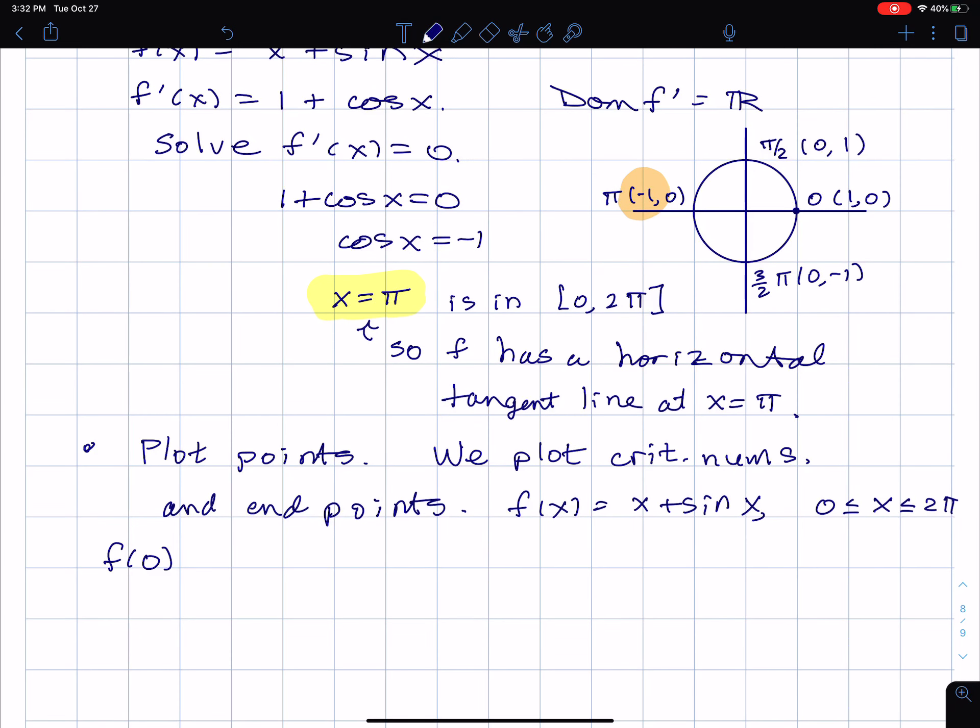So f of 0 is 0 plus sine 0. Now sine is the second coordinate of those points on the unit circle. So sine of 0, when the angle, I'll call it theta, theta 0, I see the y-coordinate is 0. So anyway, that's 0. Maybe that'll be a minimum.